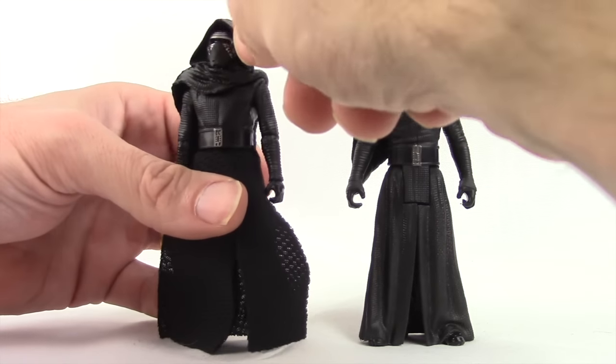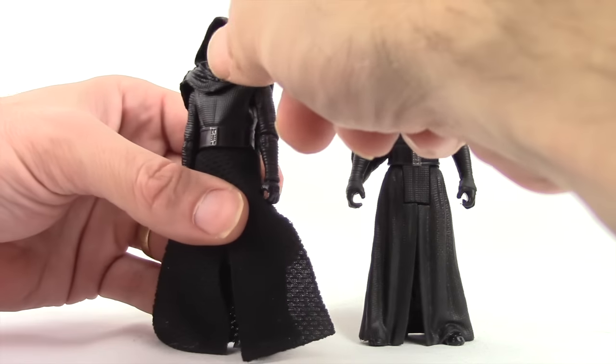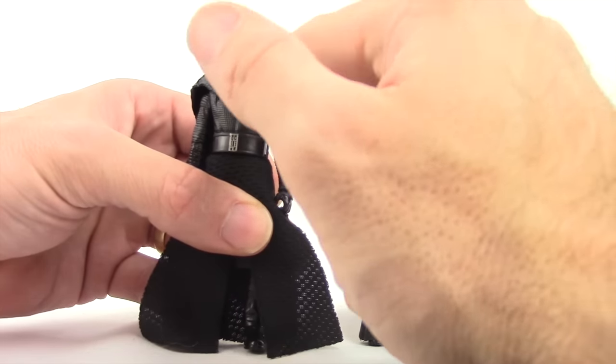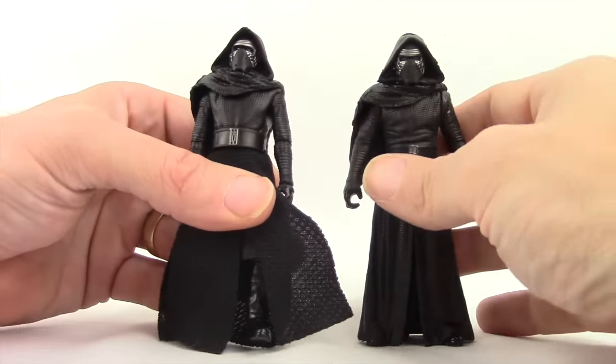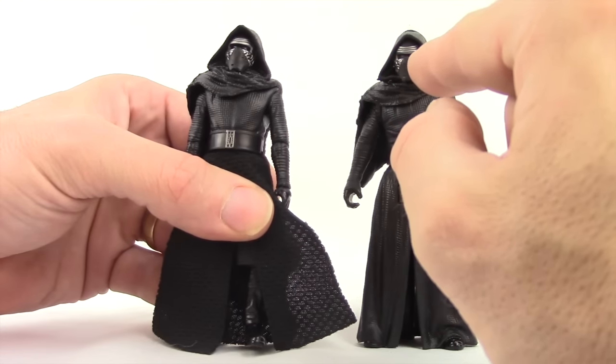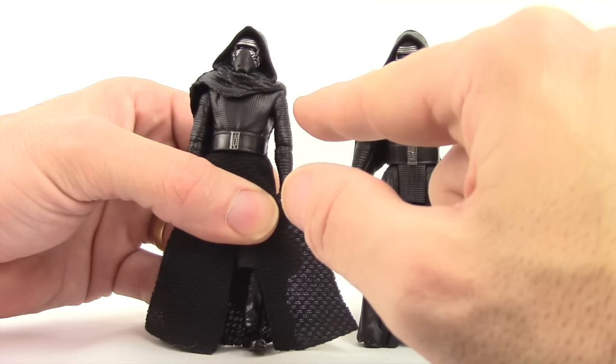Both have the hard plastic for the hood. It's not a soft goods hood, so you can't pull the hood back on this Black Series version like with the 6 inch version. That's a little disappointing to me. You actually have more movement with the head with this five points of articulated one as opposed to the Black Series.